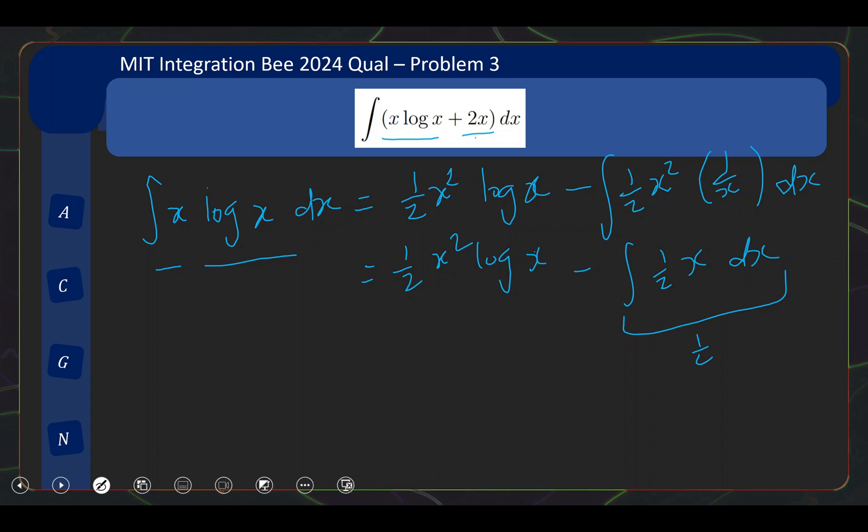And so just writing the first part over again and then I integrate (1/2)x dx. And integrating (1/2)x, that's relatively straightforward, is (1/4)x^2. So now I have the integral of the first part. Now integrating 2x obviously gives you x^2. So if I combine the results, I will finally get the answer is just (1/2)x^2 log x and then plus (3/4)x^2. So not too difficult for problem 3. Again, we are off to a good start.